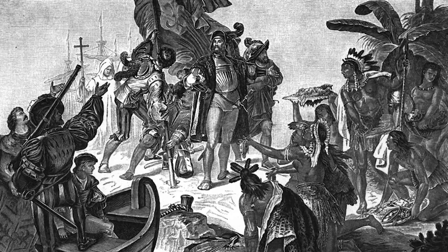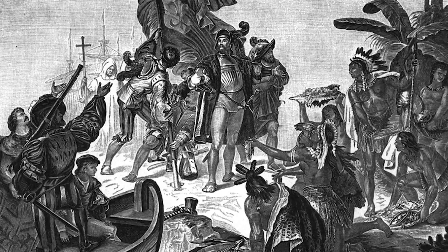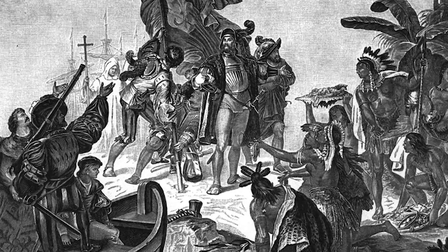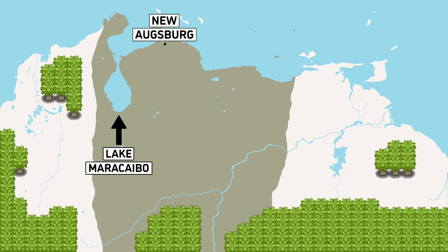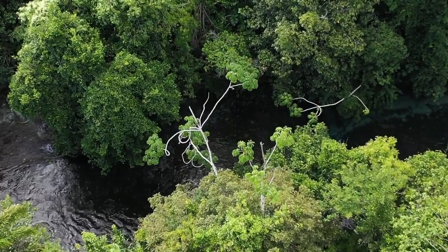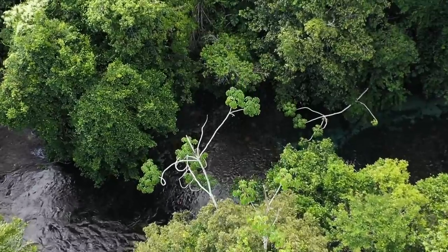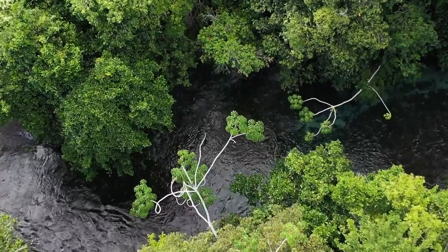In 1529, Ambrosius Ehinger, the first governor of Klein Venedig, arrived together with 281 settlers and established the city of Neu-Augsburg, which nowadays is the city of Coro. In August of the same year, Ehinger set off on an expedition to the west of Lake Maracaibo, fighting a series of battles with the indigenous people, the Coquivacoa. Following this, Ehinger founded another city he named New Nuremberg, which later would be renamed after the Coquivacoa's leader, Maracaibo. But this would not be the last of Ehinger's expeditions — some years later, he set off again, this time to find the mystical El Dorado.